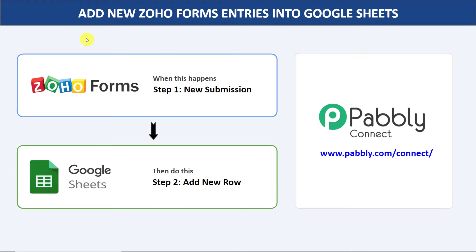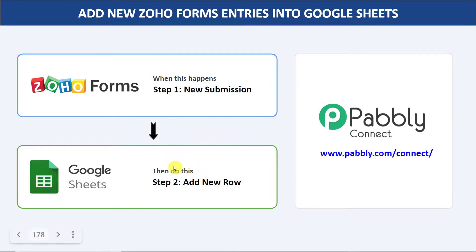Hello everyone. In this video, we will learn how to automatically add new Zoho form entries into Google Sheets. The idea is that if someone fills out your Zoho form, the data of that particular response will be automatically added into Google Sheets. But there is no direct connection between Zoho Forms and Google Sheets, so I will be using an integration and automation software called Pabbly Connect that integrates Zoho Forms and Google Sheets. The best part is that a person without any technical background can perform this integration easily.